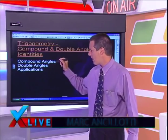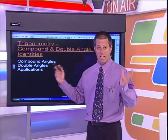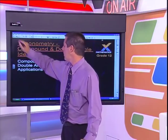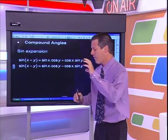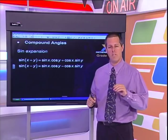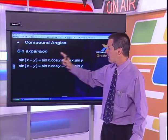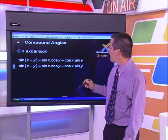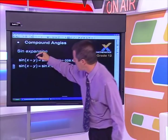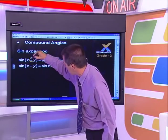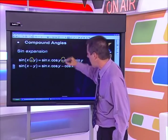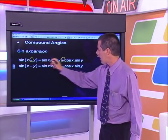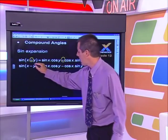We're going to look at compound angles, double angles and some applications. The first thing I'm going to do is a very quick revision: the sine expansion. The wonderful thing, if you look very closely, is that the sine expansion always keeps its sign. So when you're expanding sine, it keeps the same sign. There's a negative in between and that will give me a negative in between.